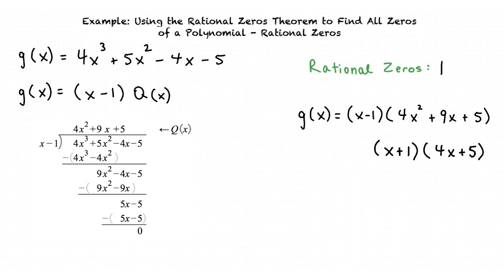We set these factors equal to 0 and we find that x equals negative 1 and x equals negative 5 over 4 are rational zeros. This means that all of our rational zeros are x equals 1, x equals negative 1, and x equals negative 5 over 4.